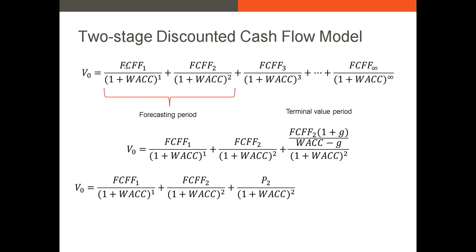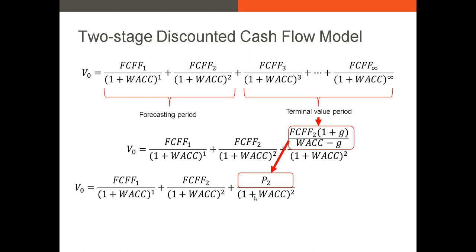At some point you're not going to be able to estimate free cash flows accurately, so that's where the Gordon growth model or constant growth model comes in — you need to estimate all free cash flows from the start of year three off into perpetuity. This single-stage formula grows free cash flows at a constant rate and discounts at the WACC, giving us the price of all those future cash flows discounted back to year two. We then discount that terminal value back to the present at the WACC.